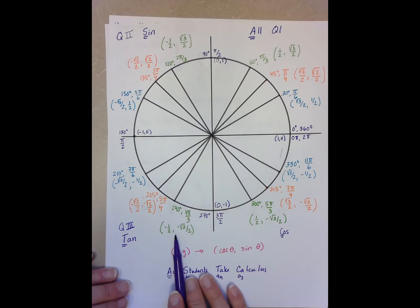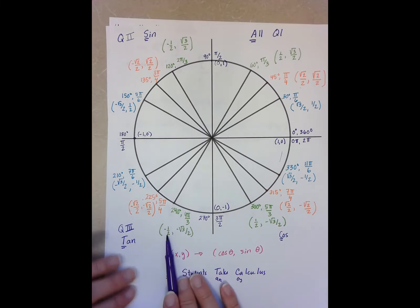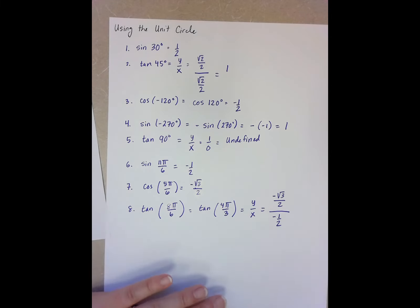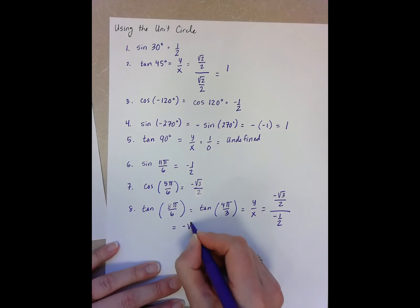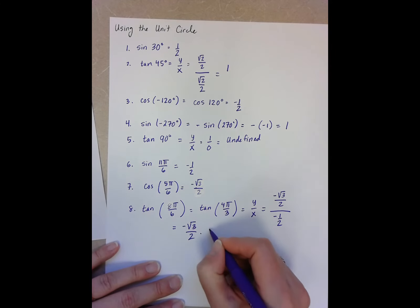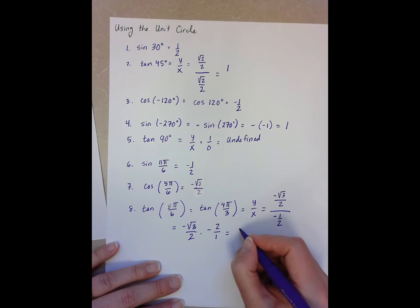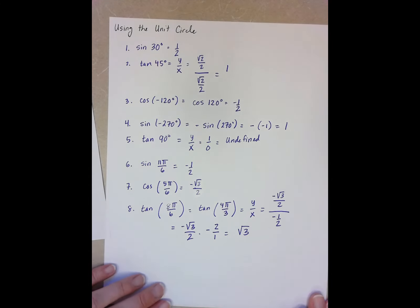it's 240 degrees, and it's going to be my y over my x. That's negative root 3 over 2 all over negative one-half. If you remember, when I'm dividing fractions, I'm really multiplying by the reciprocal. My 2's cancel. My negative times a negative becomes a positive, so the answer is root 3.